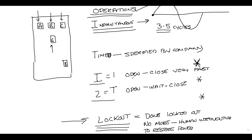A timed operation means open, wait, then close — and you specify this wait time to whatever your company wants. Typically I get one I operation and two T operations. Then the last thing — if the fault still remains on my circuit — you're going to have a condition called lockout. The breaker will give an indication and send a signal to dispatchers: I am now in lockout. Lockout means the device has been isolated and disconnected. No more automatic operations — it's going to take human intervention to restore power.